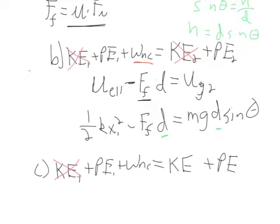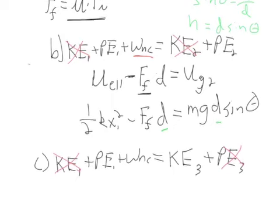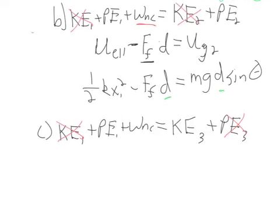So in part C, once again we have KE at point one plus PE at point one plus work done by non-conservative forces is going to be equal to KE three plus PE three. We see KE₁ is 0.